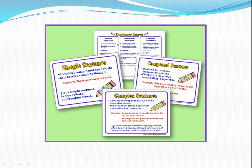There are basically three sentence types: simple sentence, compound sentence, and complex sentence. A compound sentence contains two or more independent clauses joined by coordinating conjunctions. For example: 'The boys went to the park but they did not go to the zoo.' Complex sentences contain an independent clause and a dependent clause, where the dependent clause begins with a subordinating conjunction — we will discuss this in detail in the next slide.